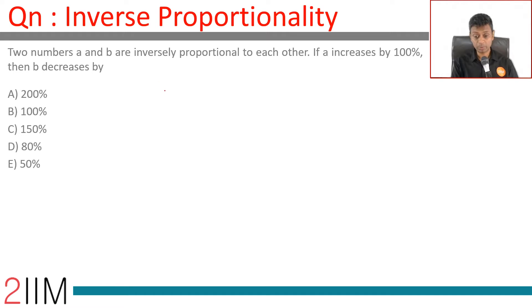Two numbers a and b are inversely proportional to each other. a is proportional to 1 by b. What this means is a into b is a constant. If a is increased by 100%, so a becomes 2a.